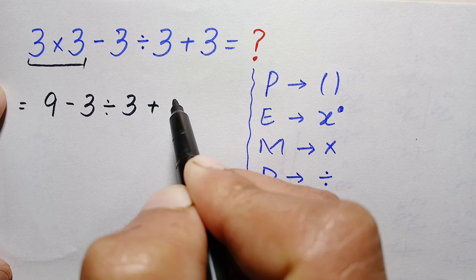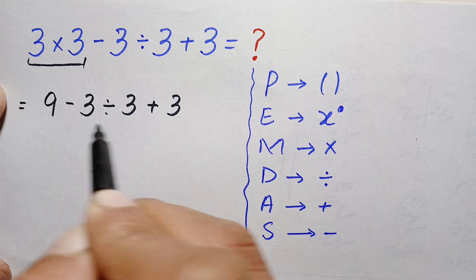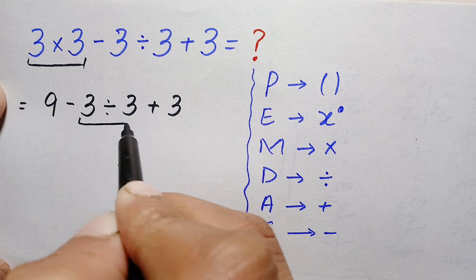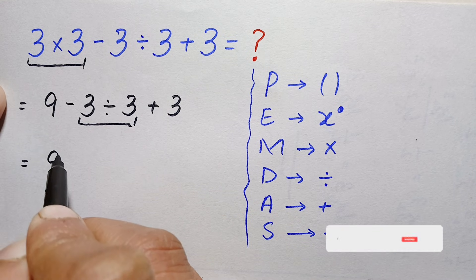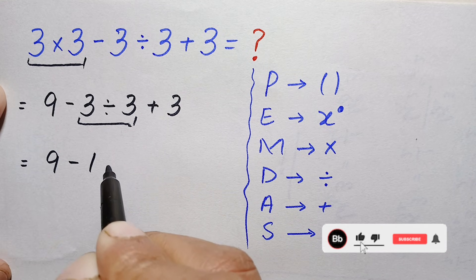Now here we have three operations. Next we will do the division, and 3÷3 is simply 1. So this will become 9-1+3.